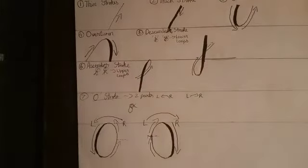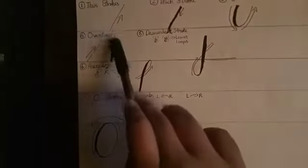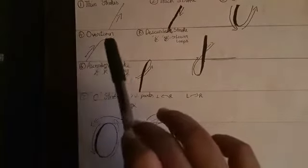The fourth rule is known as overturn. When you do like this and this part is coming down, you need to double this part and fill it.